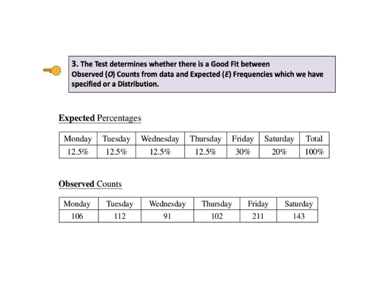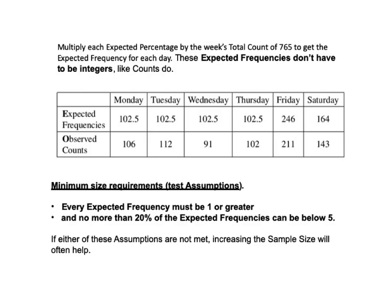Counts by definition are always non-negative numbers — 0, 1, 2, 3, etc. To compare the observed counts to the expected percentages, we do not convert observed counts into proportions or percentages. This is because counts contain information related to the sample size, and that information would get lost in converting to proportions or percentages. Instead, if needed, multiply the expected percentages by the total count to get expected frequencies. These expected frequencies do not have to be integers like counts do.